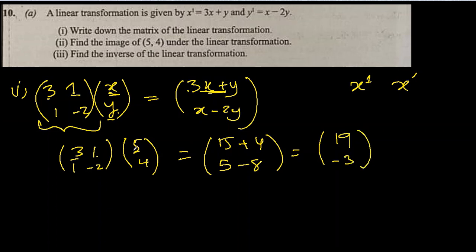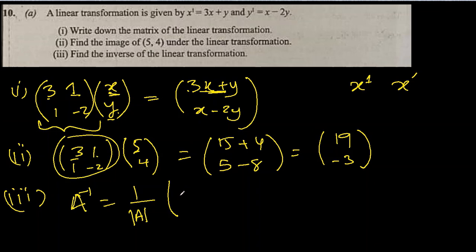Find the inverse of the linear transformation, that's the third part. For the inverse, let's call this matrix A. A inverse will be 1 over the determinant of A multiplied by adjoint of A. Let's find the determinant of A first, which will be 3 times minus 2, minus 6, minus 1 times 1, which is minus 1, equals negative 7. So minus 1 over 7.